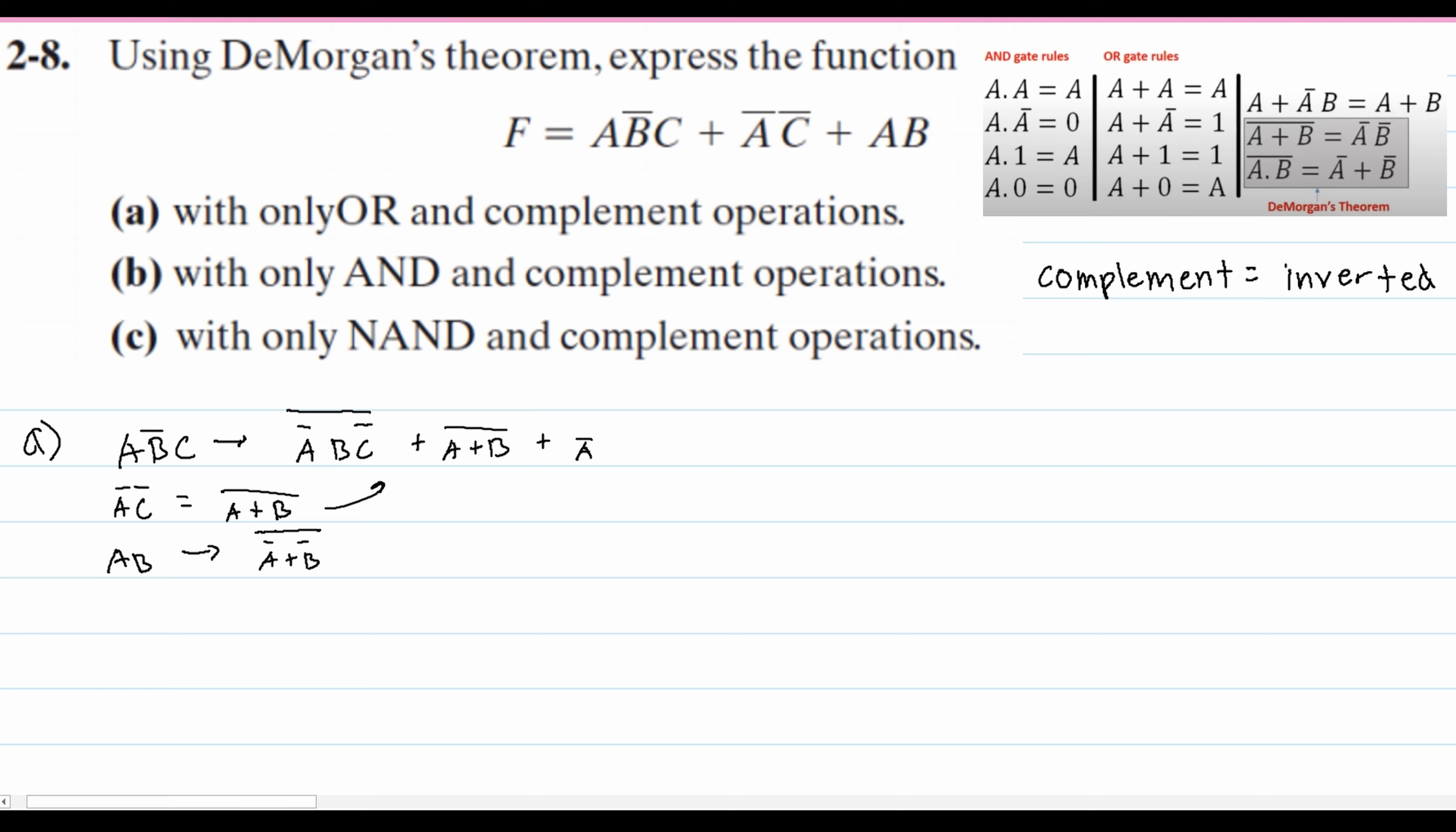We're now going to add this to our overall equation. We have A' + B' with the not over all of it. And that is the answer to part a with only OR and complement operations.